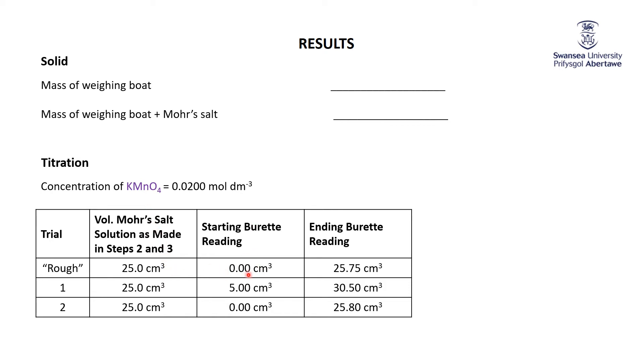Starting burette with zero, as you saw, ending burette 25.75 cubic centimeters. Then I did it a little bit more precisely. Again, 25 cubic centimeters here, I started at five just because I couldn't reach all the way up to zero, and I added enough to get up to 30.5. And then my second accurate or precise one went from zero to 25.8 cubic centimeters.